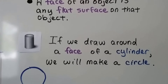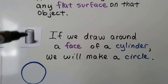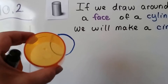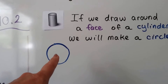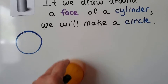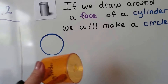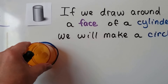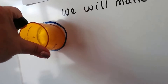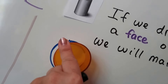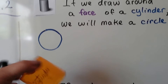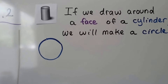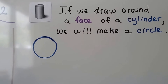If we draw around a face of a cylinder, we'll make a circle. Here's my cylinder — if we take this flat face, it's flat on the top and flat on the bottom. If I put this on a piece of paper, I can draw around it and it'll make a circle. We took a 3D space shape and made a plane shape out of one of the faces by tracing around the edge of the face.